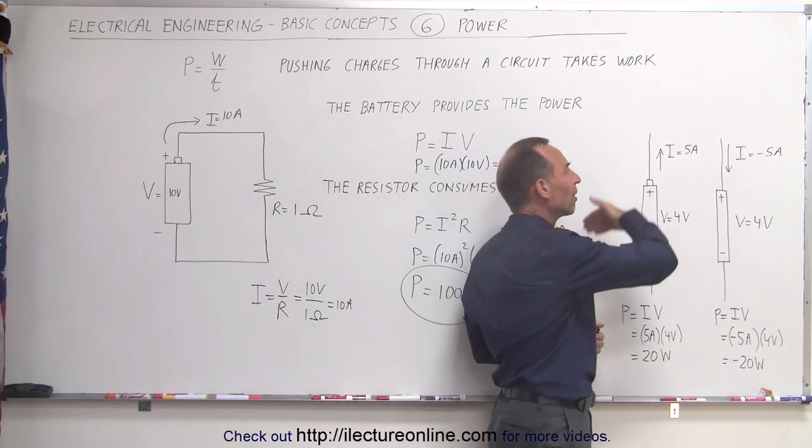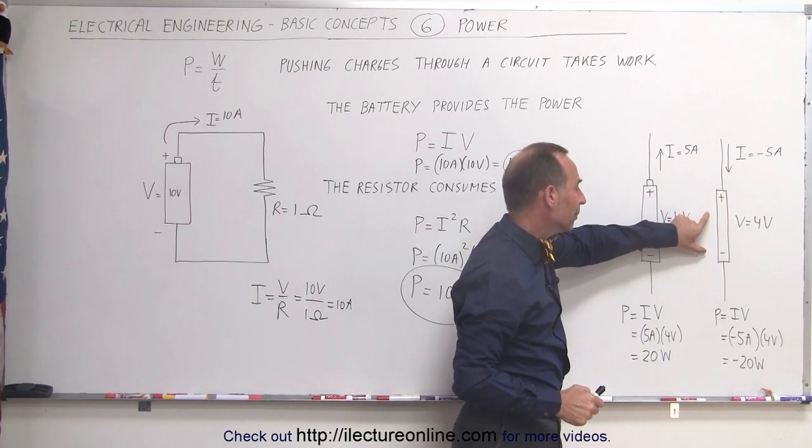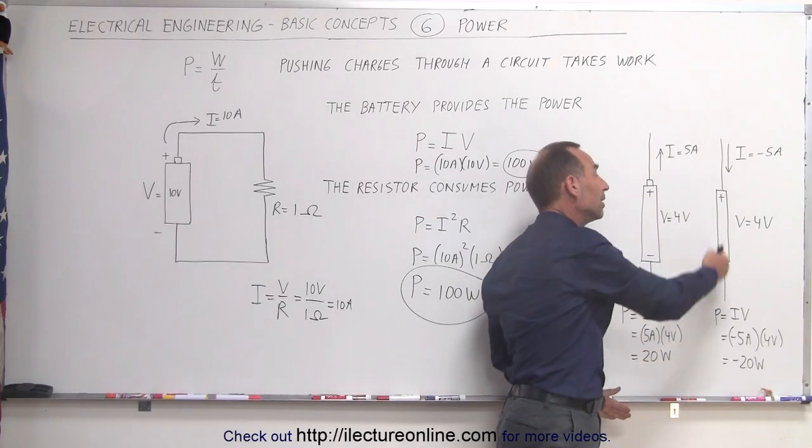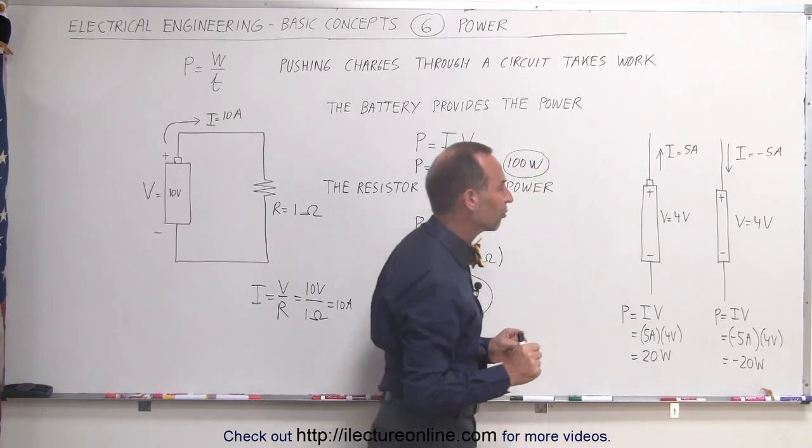But if something else is driving current in the opposite direction, then this battery does not provide positive power, then we have negative power across the battery, because the current is being driven in the opposite or negative direction. So we want to make sure we keep that straight as well.